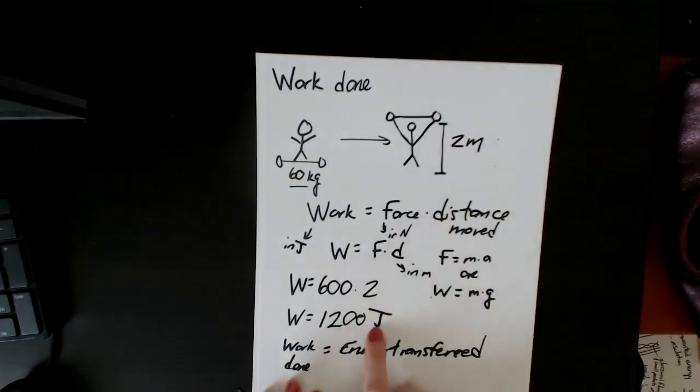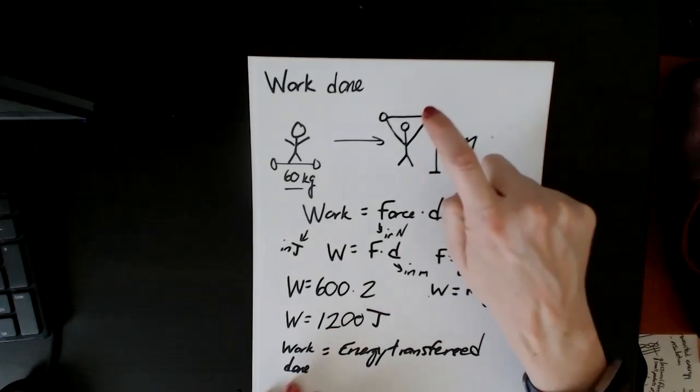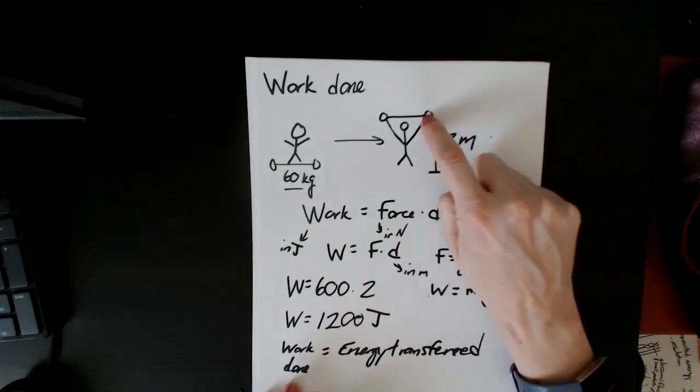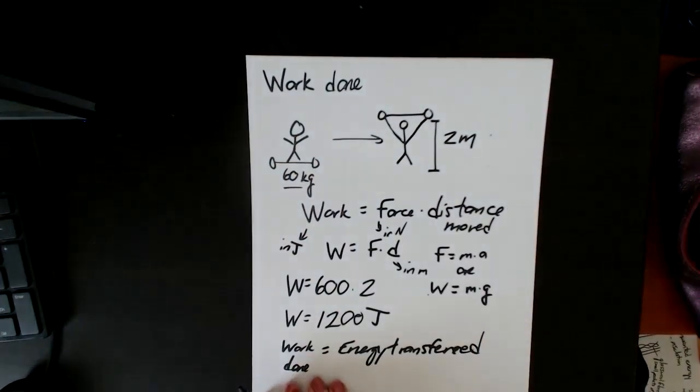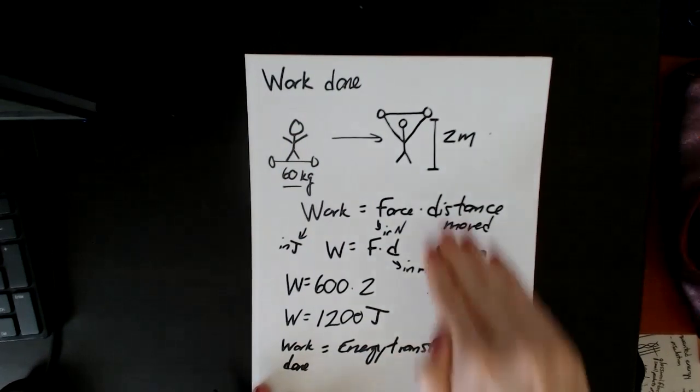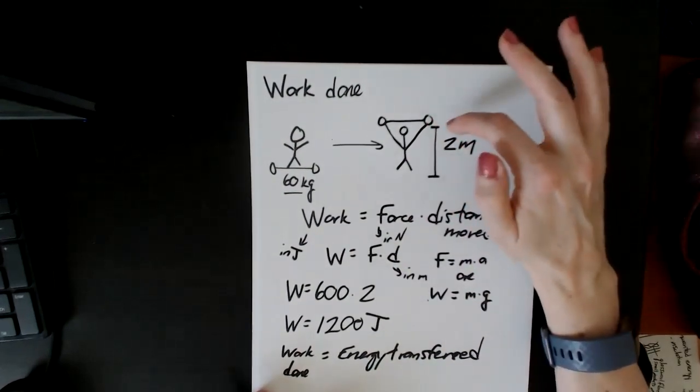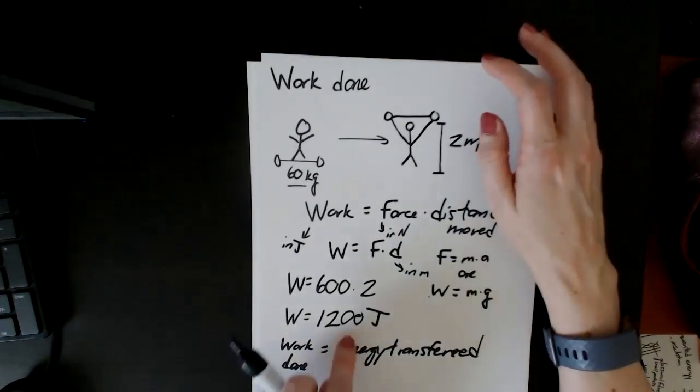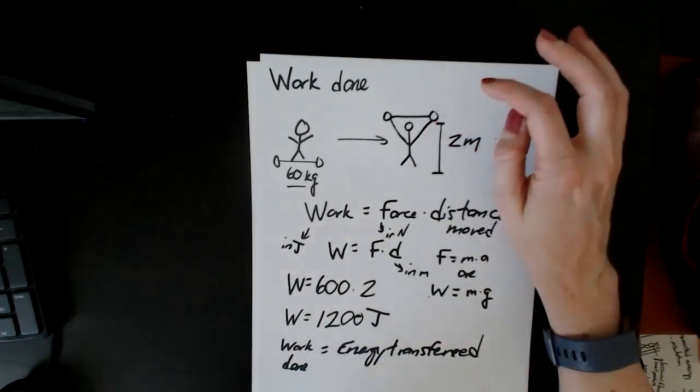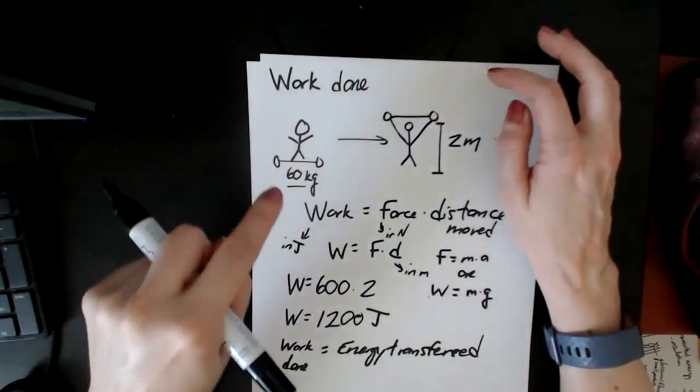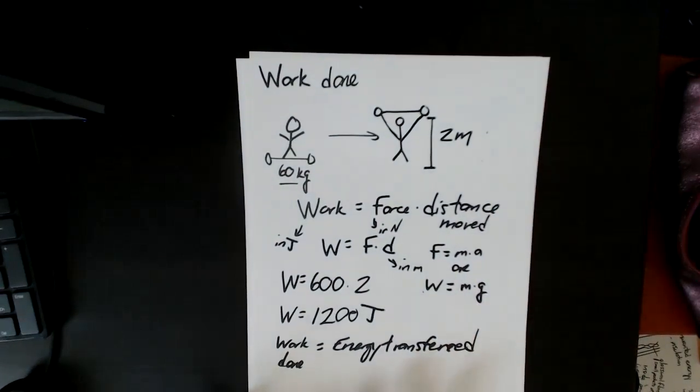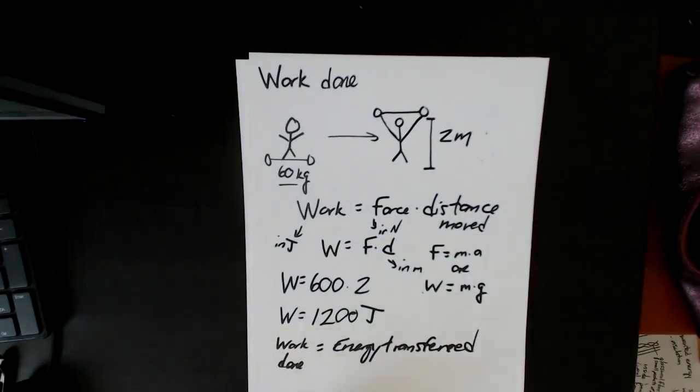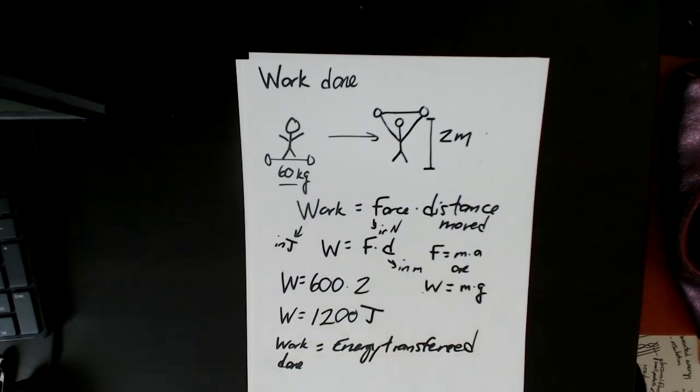And the idea is that the energy that has been transferred to this object, this object has gained 1,200 joules of gravitational potential energy, and every single joule of that comes from the work that is done by this person. So the work done on an object is the same as the energy that has been transferred to that object. So this object has experienced a gain of 1,200 joules in the gravitational potential energy because this person has done 1,200 joules worth of work on that dumbbell. So that's the first key idea within the work done.